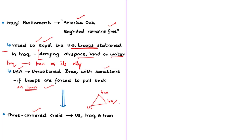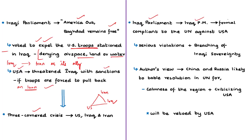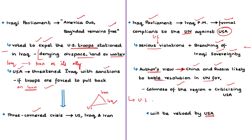Another consequence is that the Iraqi prime minister is expected to make a formal complaint to the United Nations against the United States, as US has committed serious violations and breached Iraqi sovereignty. In this regard, the author notes that China and Russia are likely to table a resolution at the United Nations calling for calm in the region while criticizing the United States. However, if such a move is made by Russia and China, it will certainly be blocked by America, as the US is one of the five permanent members of the UN Security Council holding veto power. If any one of the five permanent members casts a negative vote, the resolution would not be approved.